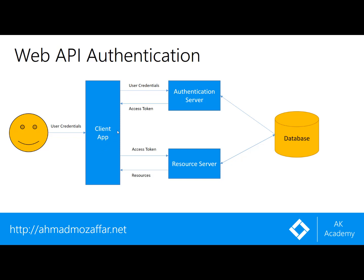When the client application wants to access protected resources from the API, it sends that access token in the header of the request. The API receives that request, takes the access token, and tries to validate it. If it's valid then it gives the user access to that resource; otherwise it responds with a 401 status code, which means you are not authorized to access that data or resource.